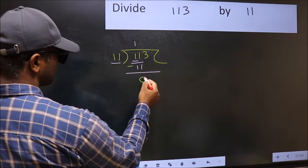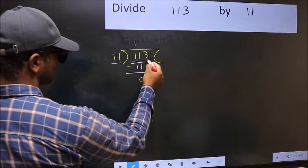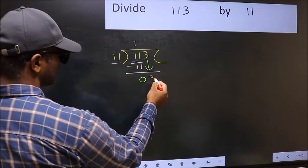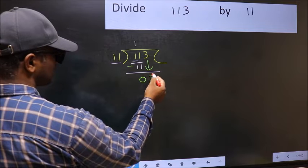Now you should subtract. 11 minus 11, 0. After this, bring down the beside number. So 3 down.